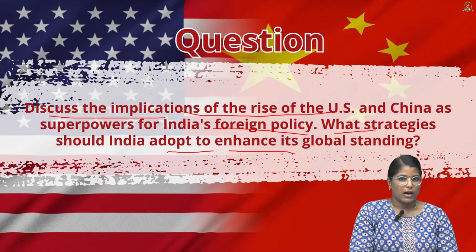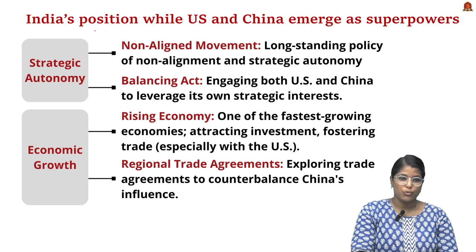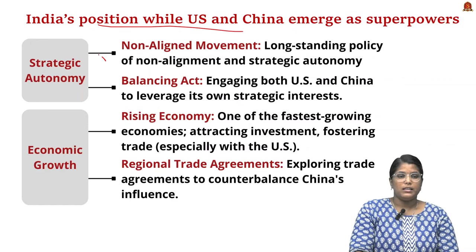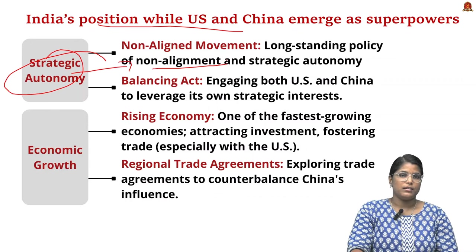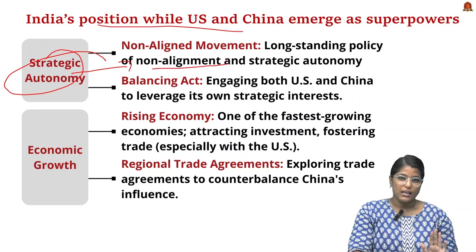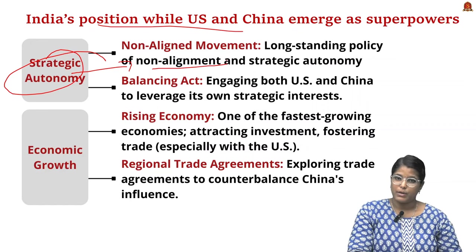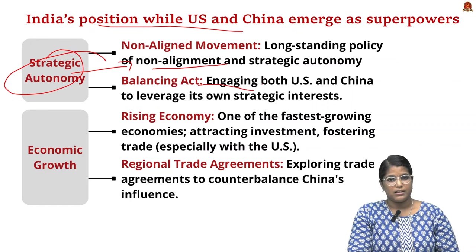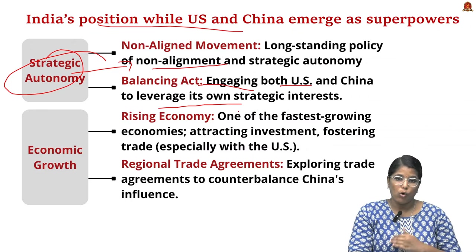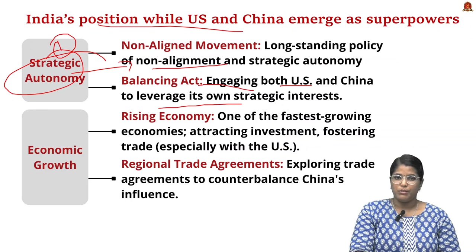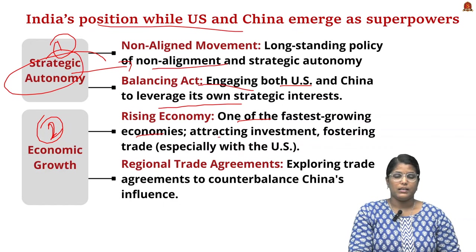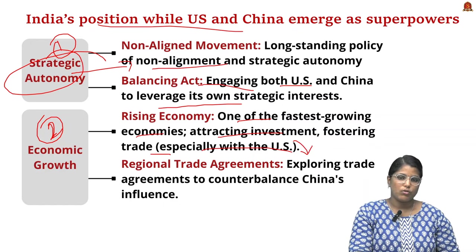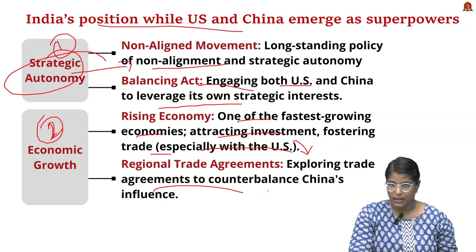India always maintains strategic autonomy — traditionally a follower of non-alignment, but in the current scenario we have been aligning with multiple countries, ensuring non-alignment in a new era. We are balancing and engaging both the US and China to leverage our own strategic interests. Secondly, India is one of the fastest growing economies with a large middle class, attracting investment and fostering trade, especially with the US, and exploring trade agreements to counterbalance China's influence.